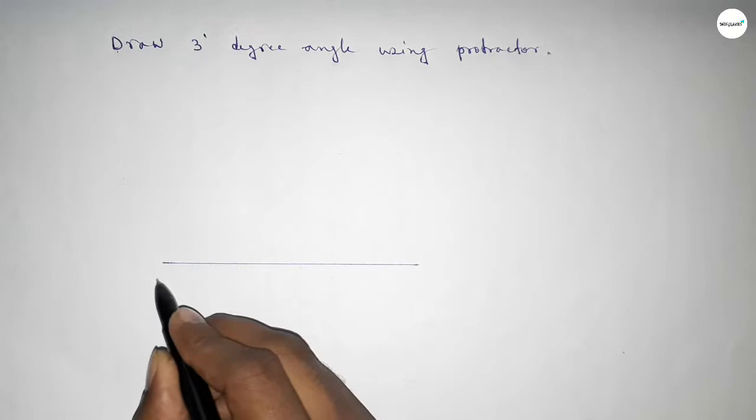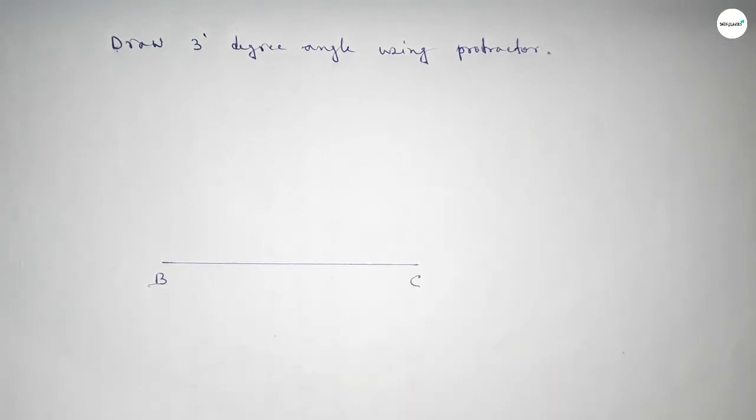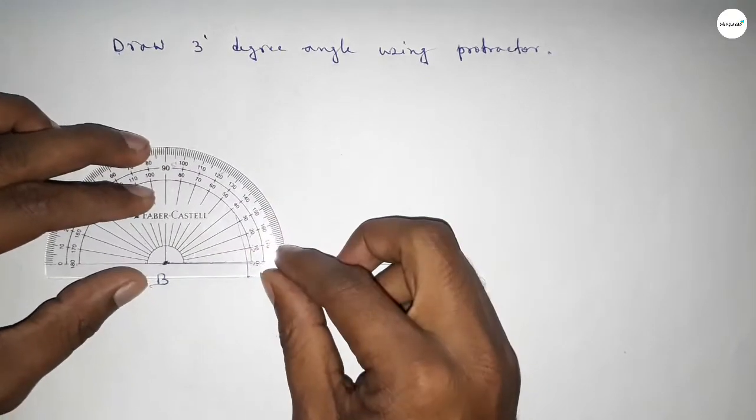First of all, we have to draw here a straight line of any length and taking here B point and here C point.